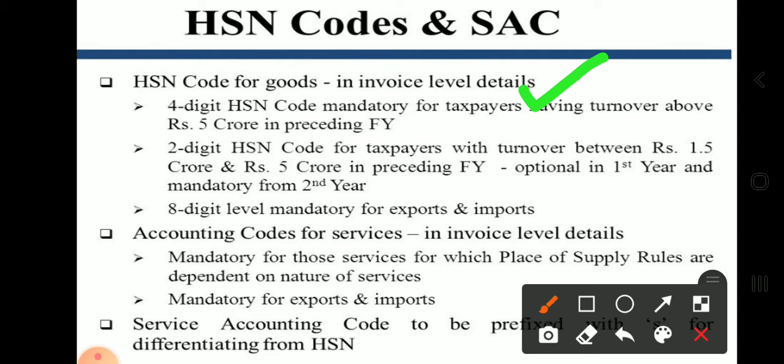A two-digit HSN Code applies for taxpayers with turnover between Rs. 1.5 crore and Rs. 5 crore in the preceding financial year — it is optional in the first year and mandatory from the second year. An eight-digit HSN Code is mandatory for exports and imports. For the Accounting Code for services at invoice level, it is mandatory for services where place of supply rules depend on the nature of services, and mandatory for exports and imports. The Service Accounting Code is to be prefixed with 'S' to differentiate it from the HSN Code.